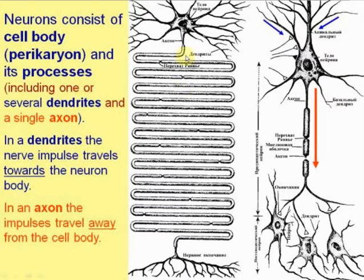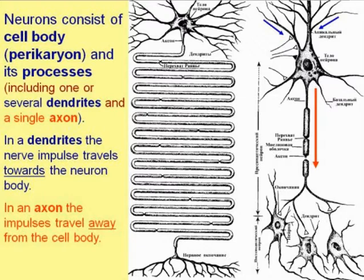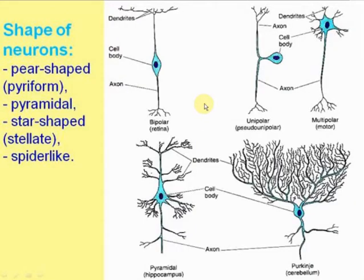Dendrites are derived from the Greek word 'dendron' meaning tree, because these processes have many branches like a tree. In dendrites, the nerve impulse travels towards the neuron body — dendrites accept information and nerve impulses from the environment and from other nerve cells, and convey them to the cell body for analysis. The axon conveys impulses away from the cell body to terminal neurons.